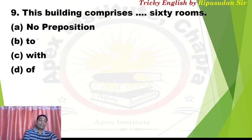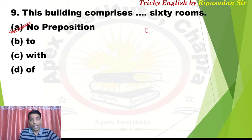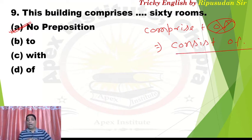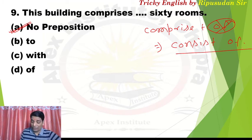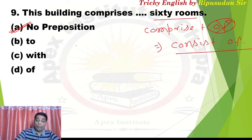Question 9: 'This building comprises dash 60 rooms.' The author mistakenly wrote 'off' as the answer, but I want to clarify — no preposition should follow 'comprise' because 'comprise' means to be made up of something. Whenever 'off' follows 'comprise', cross it out. For the same meaning, 'consist' always takes 'of'. However, if 'comprised' is used in passive voice, then 'of' can be used. So no preposition is needed here.